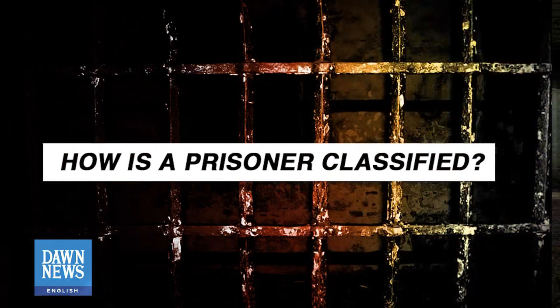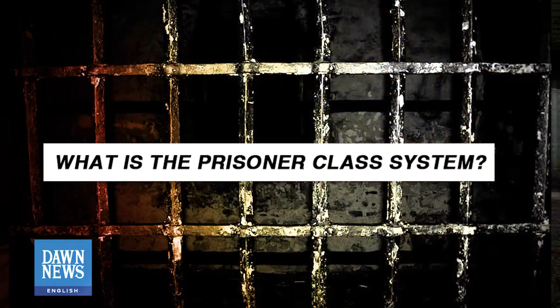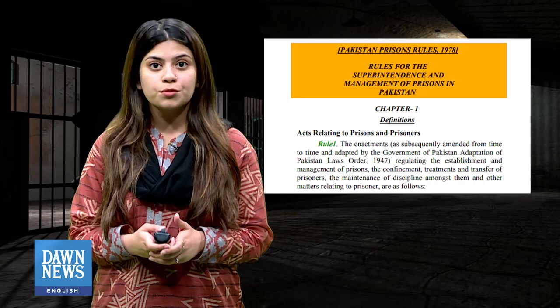How is a prisoner classified? A prisoner confined in prison may be classified as a convicted prisoner, an unconvicted or under-trial prisoner, a civil prisoner, or a state prisoner. The prisoner class system in Pakistan categorizes convicted prisoners into superior, ordinary, and political classes, according to the Pakistan Prisoners Rules 1978. The superior class includes A and B class prisoners, while the ordinary class encompasses all other convicted prisoners.